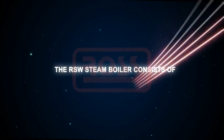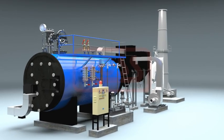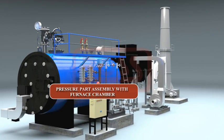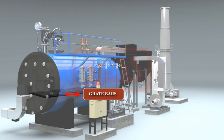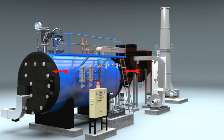The RSW steam boiler consists of pressure part assembly with furnace chamber, grate bars, front and rear smoke boxes with hinged doors,